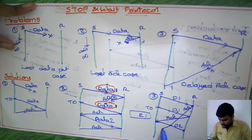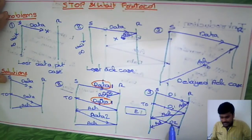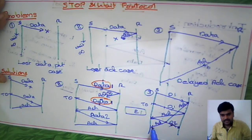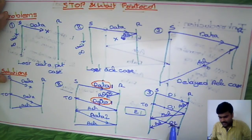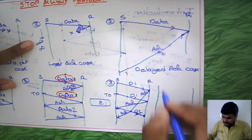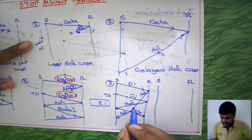Assume the acknowledgement for the second packet is received, but actually it was sent by the receiver for the first packet, and the second packet's acknowledgement was lost in between. That's the problem now. To resolve this problem, we need to introduce something extra — and to solve it, we look at the sender and receiver again.